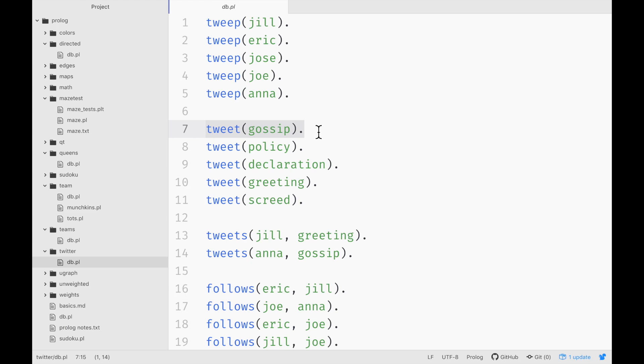And you can actually imagine facts like this that describe social media graphs. This is just graph theory, and Prologue is very, very good at it because the edges in a graph can be represented very succinctly with a rule like this one. Jill tweets a greeting. Eric follows Jill. There's a tweet called gossip. There's a tweet called Anna, or a person who tweets.